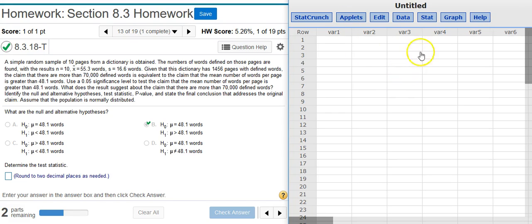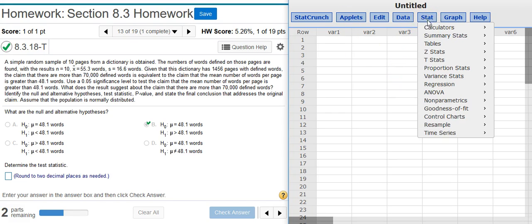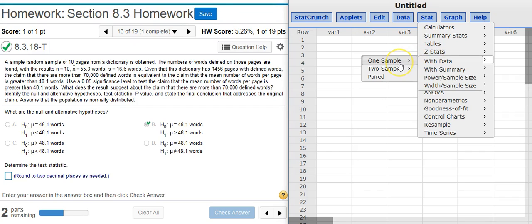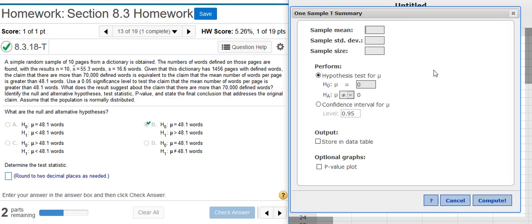Inside StatCrunch, I go to Stat, T Stats—because I don't know the population standard deviation—One Sample because we have just the one sample, With Summary because we don't have any actual data. Here in the options window, I need to put in my sample statistics from the problem statement. We have those right here, so I'm just going to take that information and stick it in here. The sample mean is x-bar, that's 55.3.